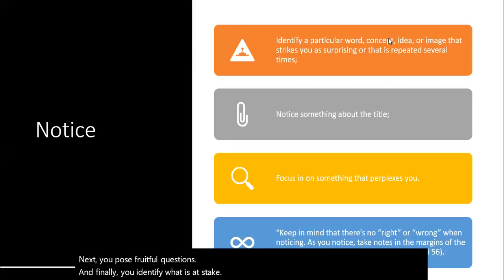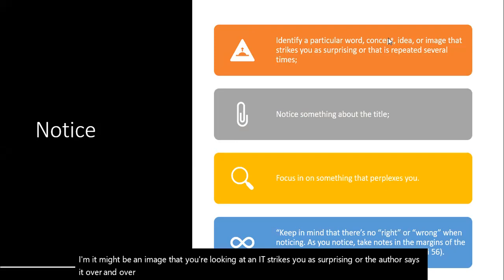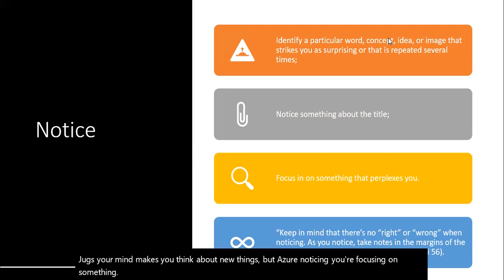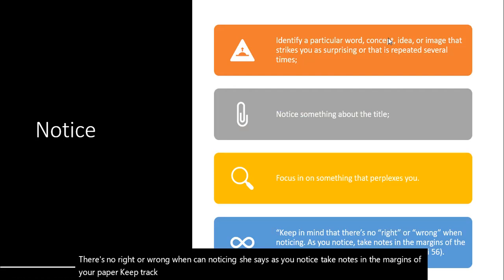Noticing is a little bit like this. You identify a particular word, a concept, an idea. And it might be an image that you're looking at and it strikes you as surprising, or the author says it over and over again. You might notice something about the title that jogs your mind and makes you think about new things. But as you're noticing, you're focusing on something that's concerning. There's no right or wrong when noticing. She says, as you notice, take notes in the margins of your paper, keep track on a separate piece of paper, because those are the things that you can reference later on.